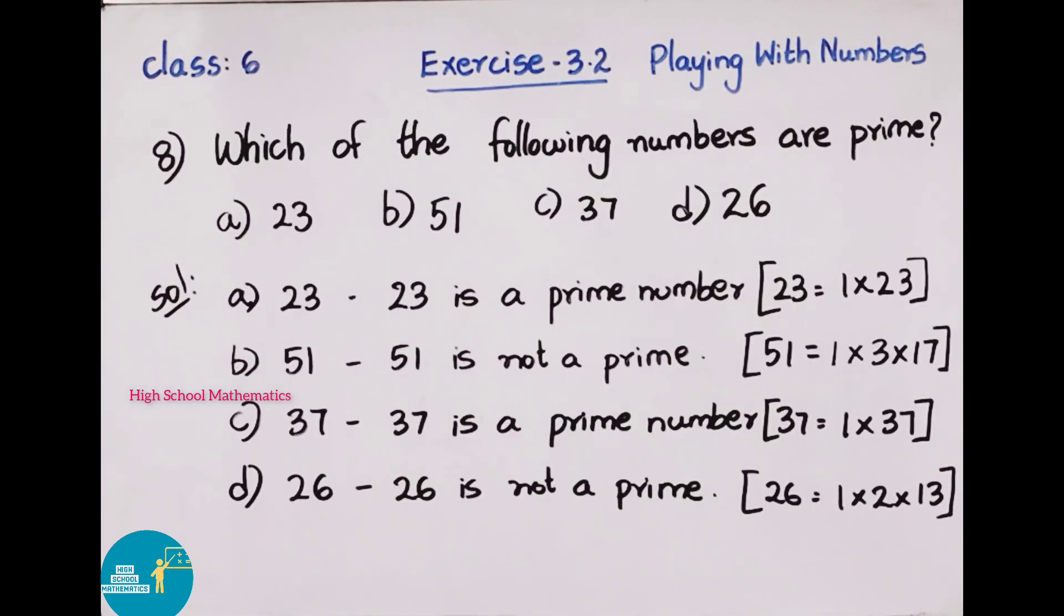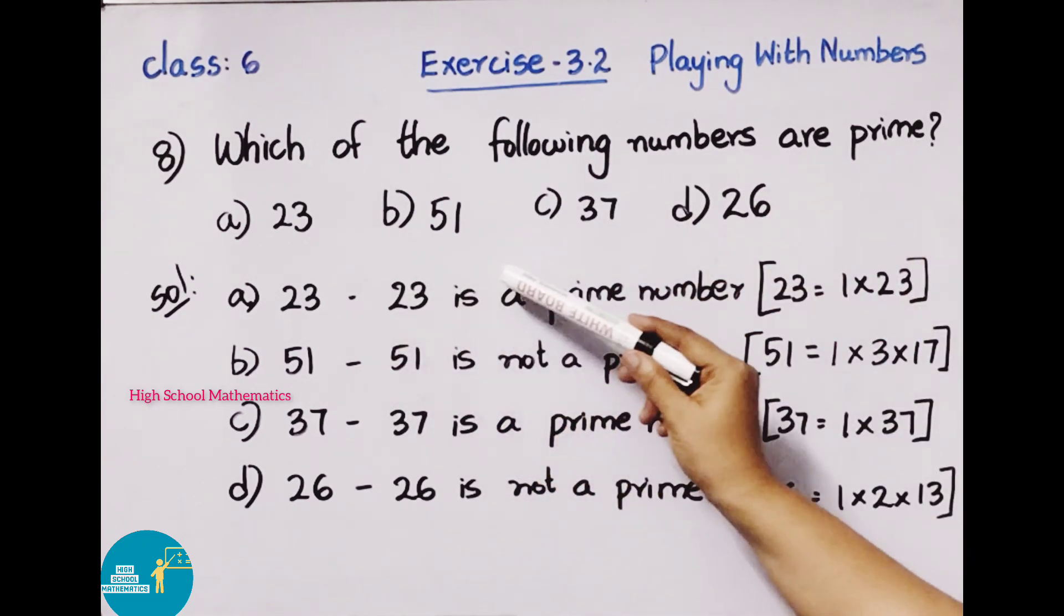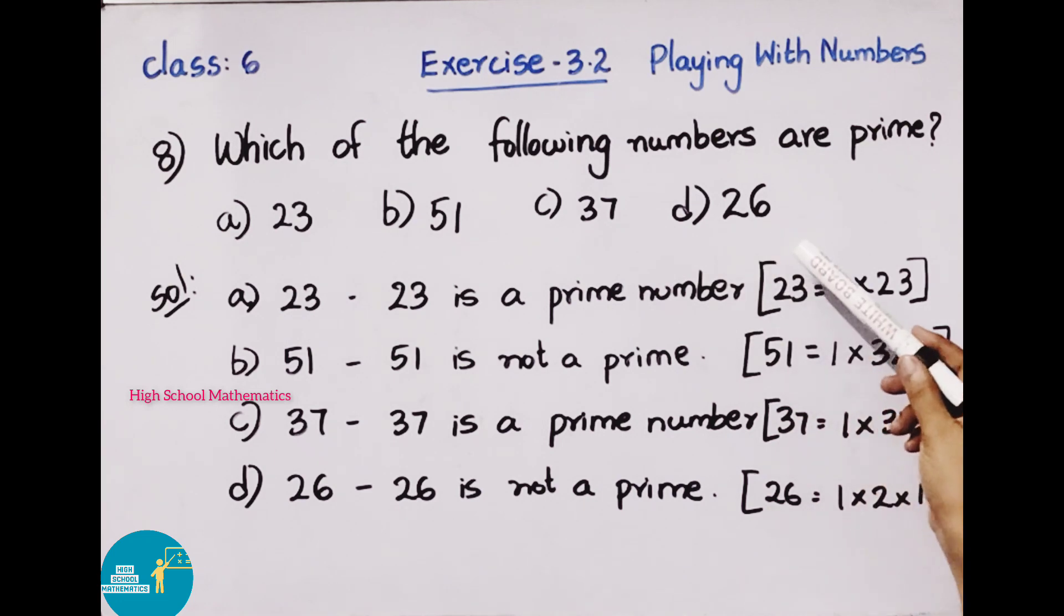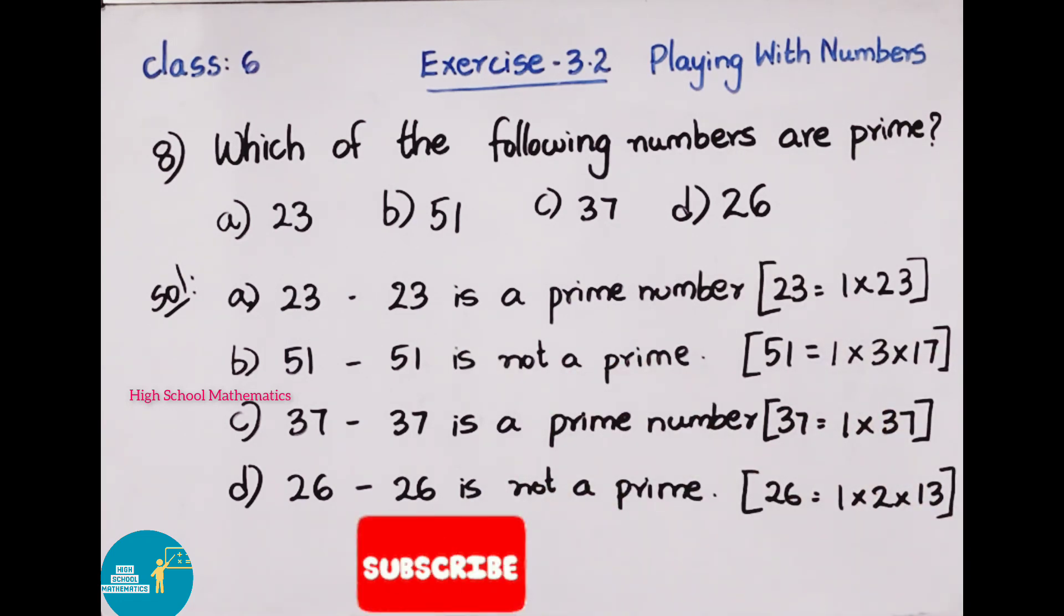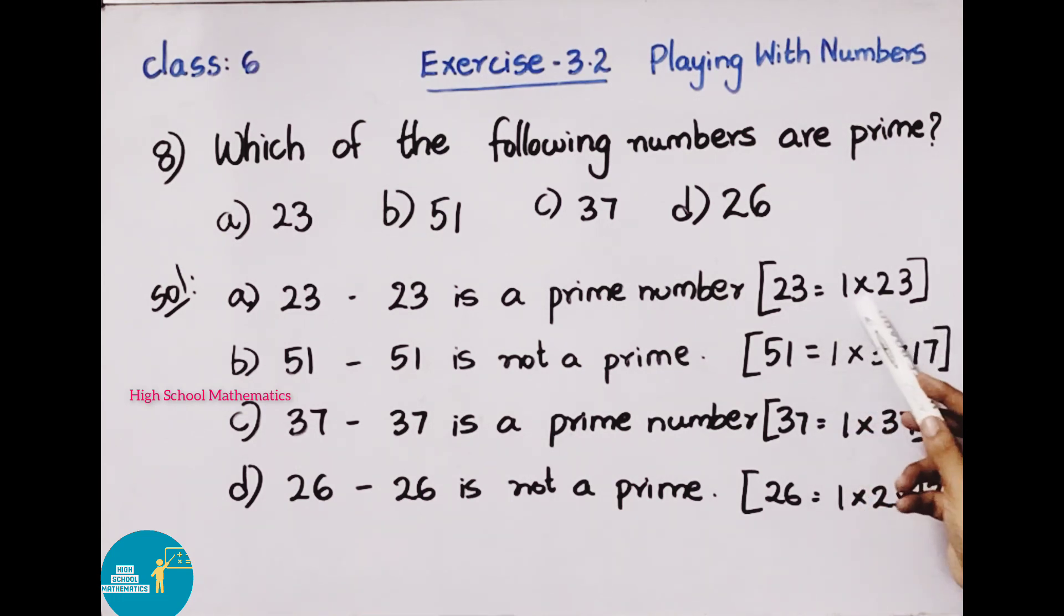Next, 8th question. Which of the following numbers are prime? a) 23, b) 51, c) 37, d) 26. Solution: 23 is a prime number. 23 can be written as 1 into 23. So 23 has only 1 and itself as factors. So 23 is a prime number.